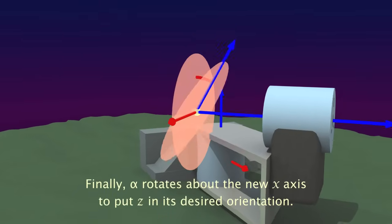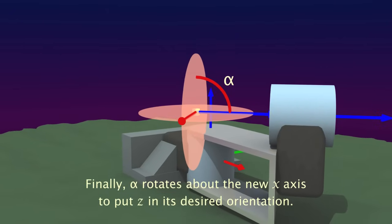Finally, alpha rotates about the new x-axis to bring z into alignment with the axis of joint motion.